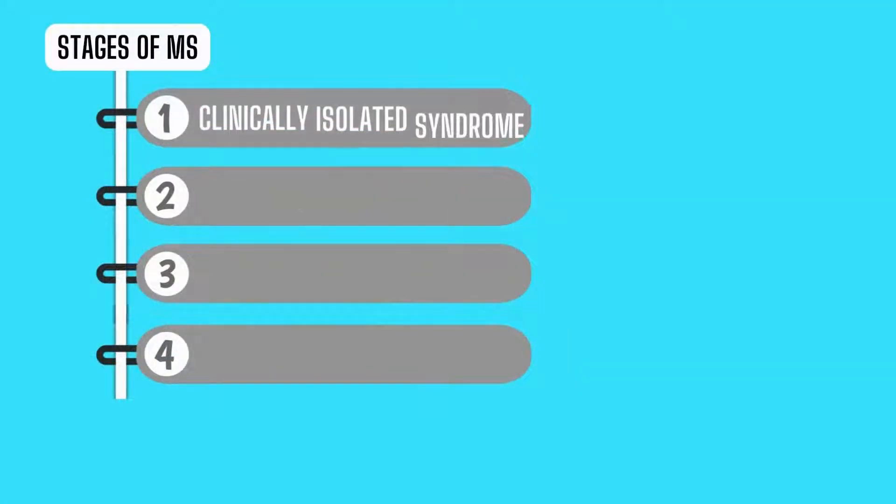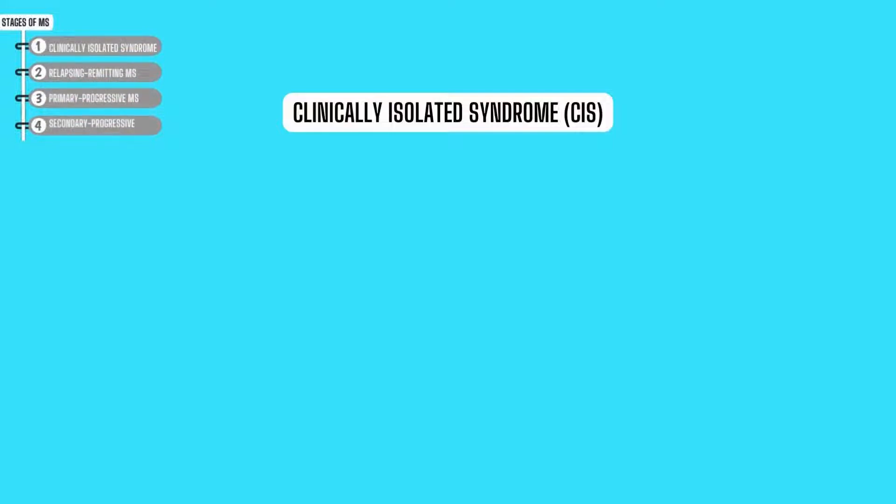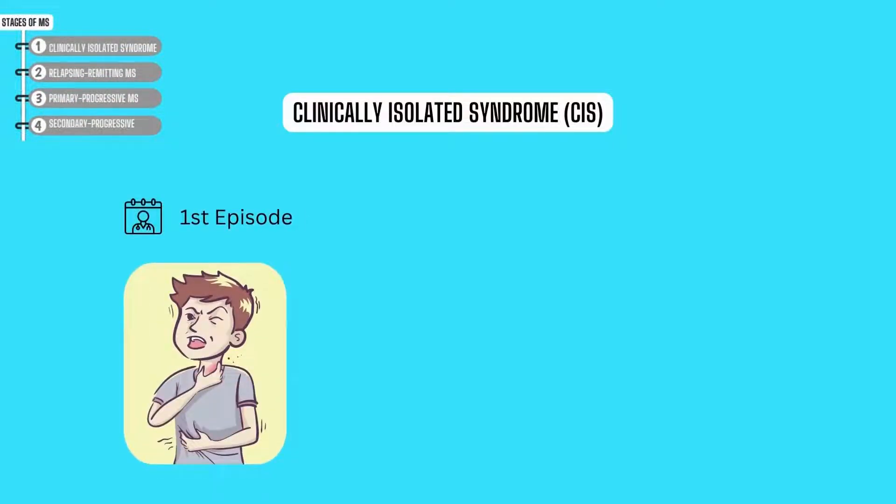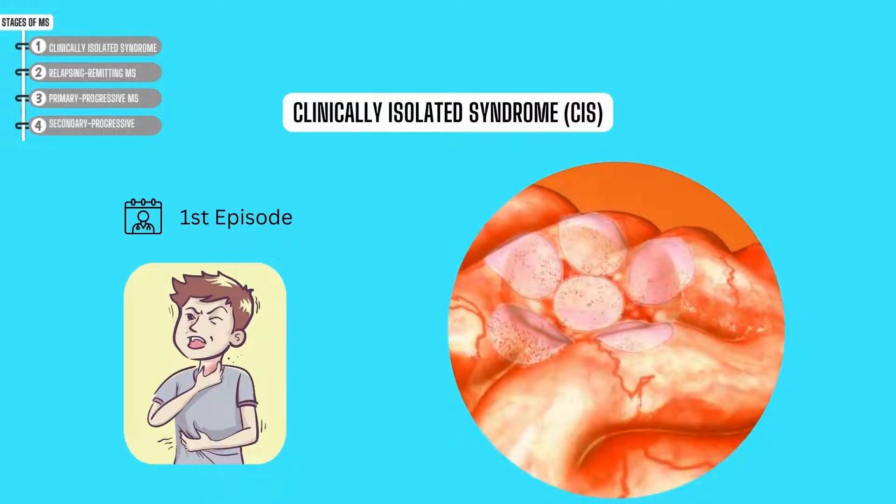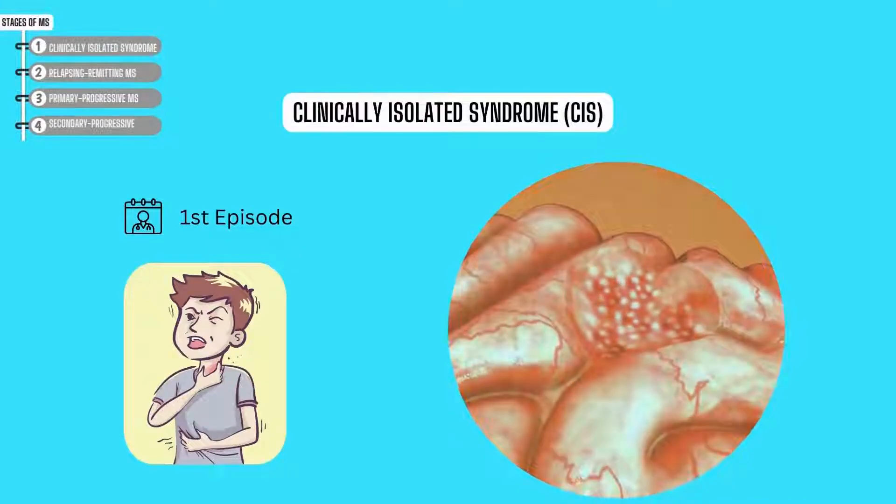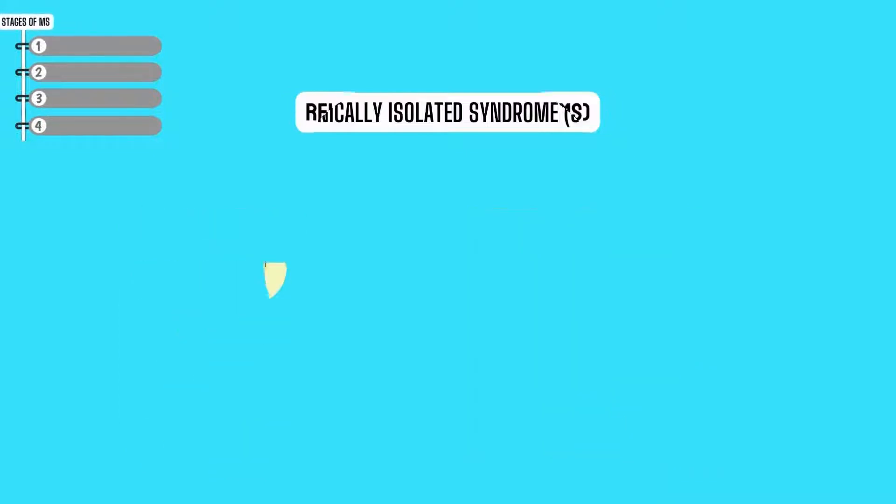There are four stages of MS in general: clinically isolated syndrome, relapsing-remitting multiple sclerosis, primary progressive multiple sclerosis, and secondary progressive multiple sclerosis. First, clinically isolated syndrome. This is the first episode of symptoms caused by inflammation and damage to the myelin covering on nerves in the brain or spinal cord. Technically, CIS doesn't meet the criteria for a diagnosis of MS, as it's an isolated incident with only one area of damage to the myelin sheath responsible for symptoms. If an MRI shows another episode in the past, a diagnosis of MS can be given.